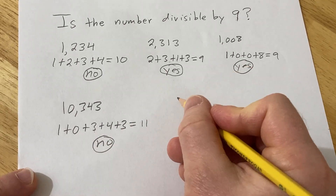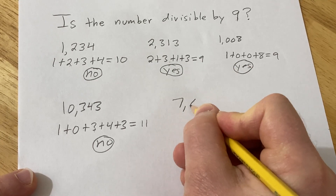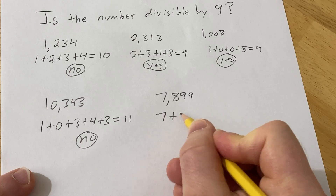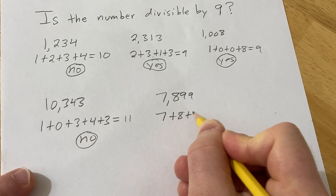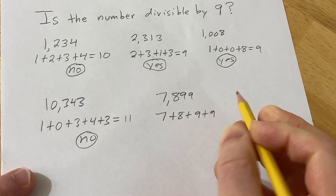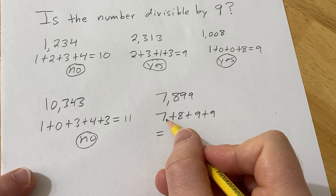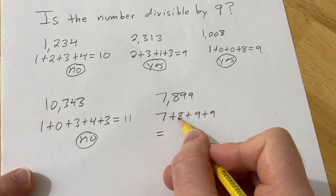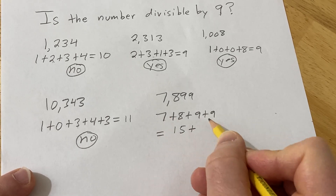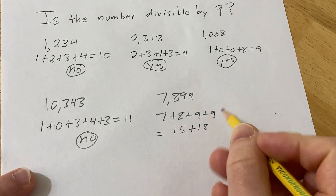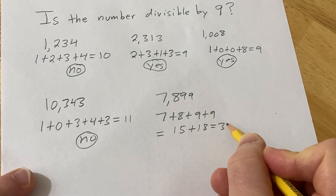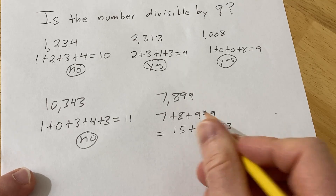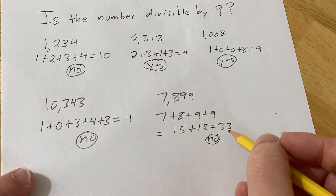How about a harder one: 7,899? Some big numbers here. So we have 7 plus 8 plus 9 plus 9. 7 plus 8 is 15, and 9 plus 9 is 18. When you add these, you get 33. So 33 is not divisible by 9, therefore 7,899 is not divisible by 9.